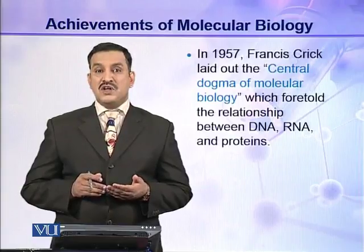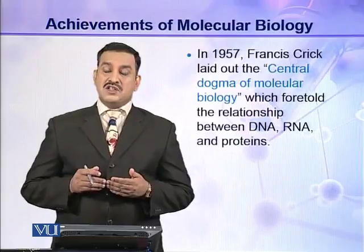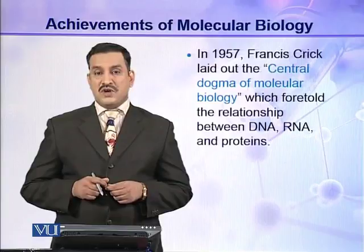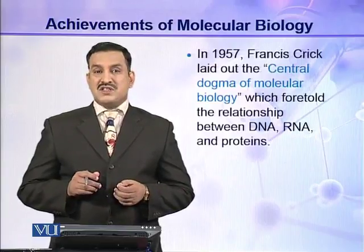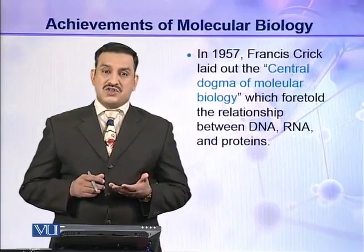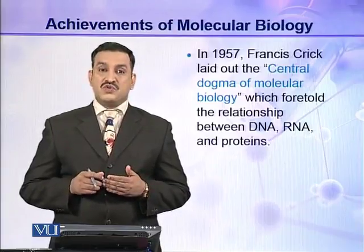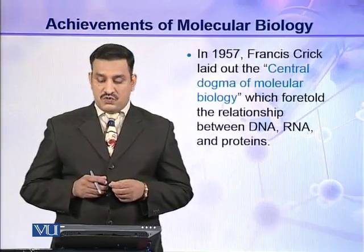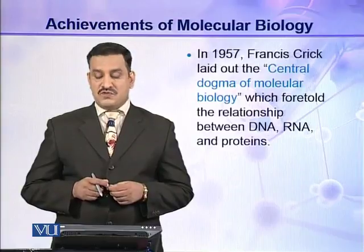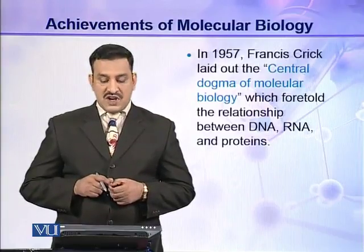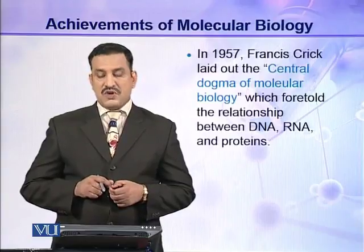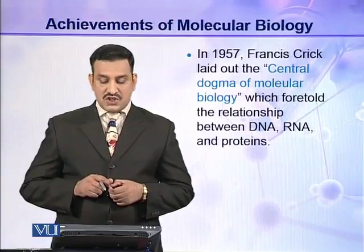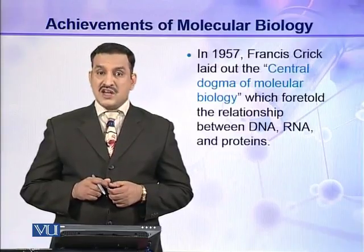Molecular biology was born and new discoveries were being made. The question was how DNA is expressed — how it transfers its information in the form of proteins. This problem was solved in 1957 by Francis Crick, who laid out the central dogma of molecular biology. This central dogma described the relationship between DNA, RNA, and protein.